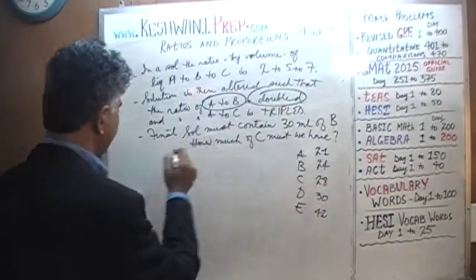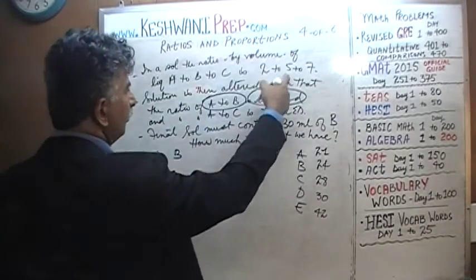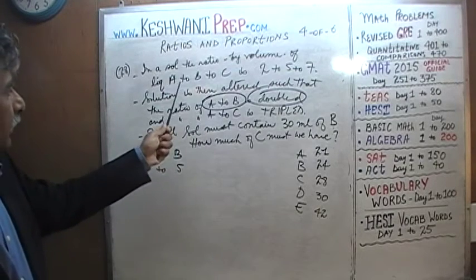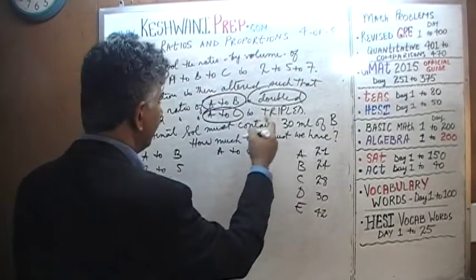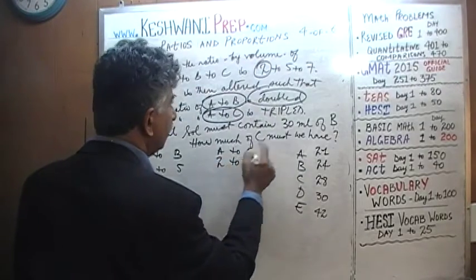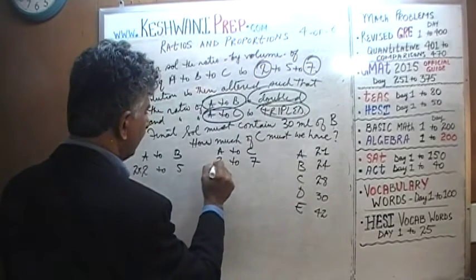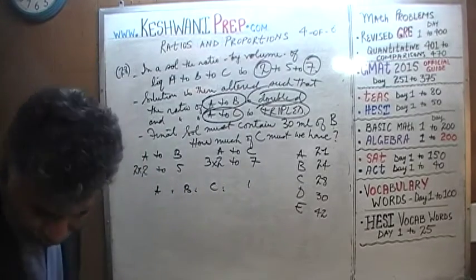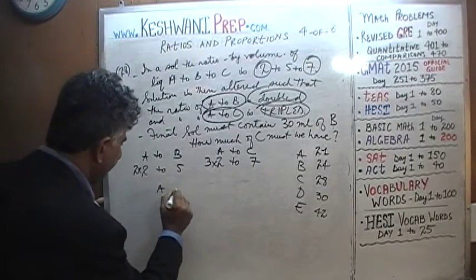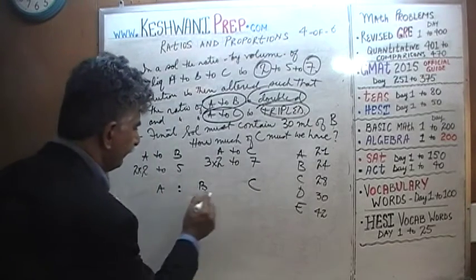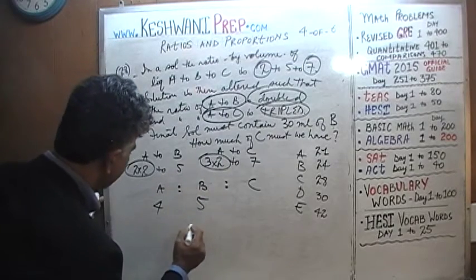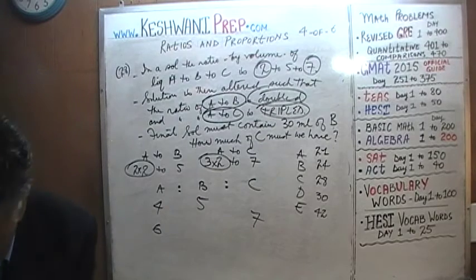We manipulate two liquids at a time. A to B: originally 2 to 5, doubled becomes 4 to 5. A to C: originally 2 to 7, tripled becomes 6 to 7. Now we combine: A to B to C. A is 4 in the first ratio and 6 in the second.